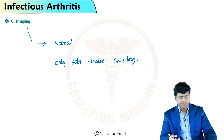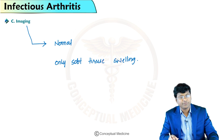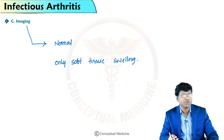Differential diagnoses for gonococcal arthritis include reactive arthritis, Lyme disease, rheumatic fever, sarcoidosis, infective endocarditis, and meningococcemia.